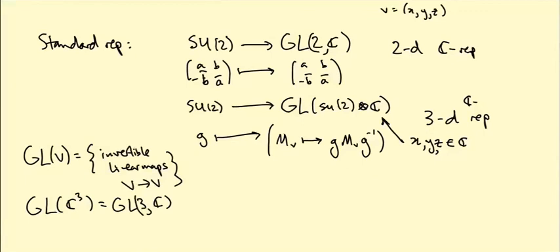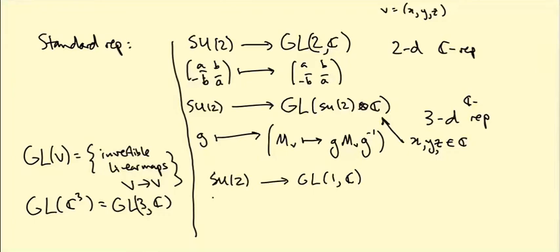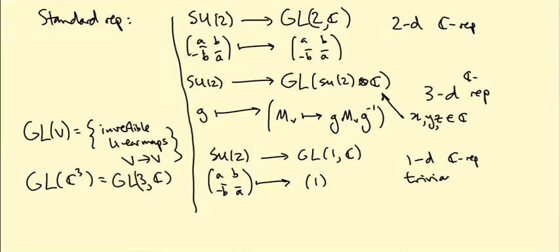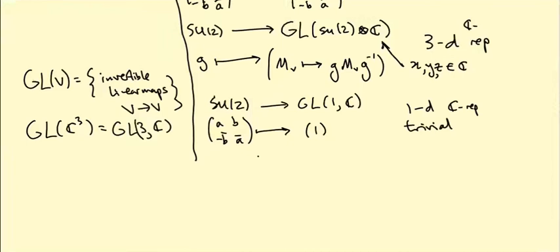We have a two-dimensional and a three-dimensional representation. Are there any more? Well, there's a one-dimensional representation — the map taking (A, B; -B̄, Ā) to the 1×1 matrix (1). That is a representation: multiplying any two elements and applying this representation gives the identity, same as applying it to each and multiplying. It's called the trivial representation because everything goes to the identity. Any one-dimensional representation is irreducible since there's no room for a proper sub-representation.